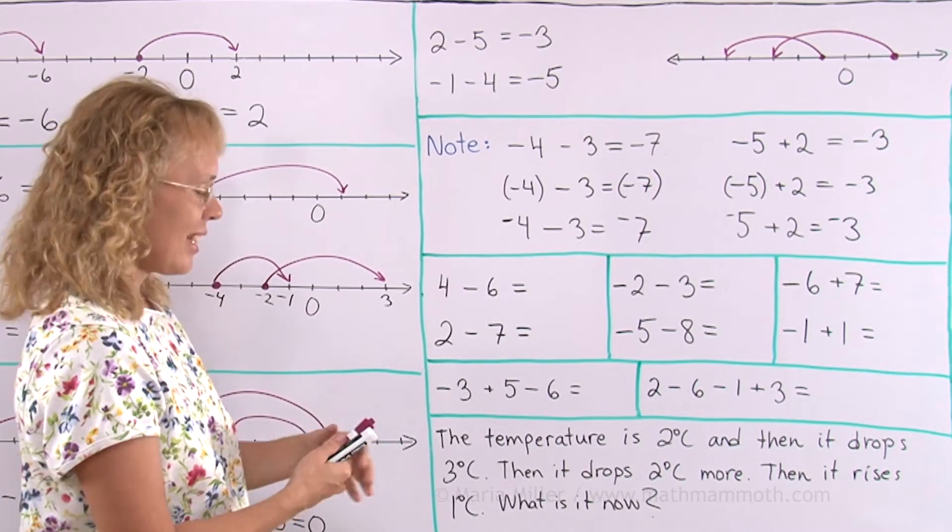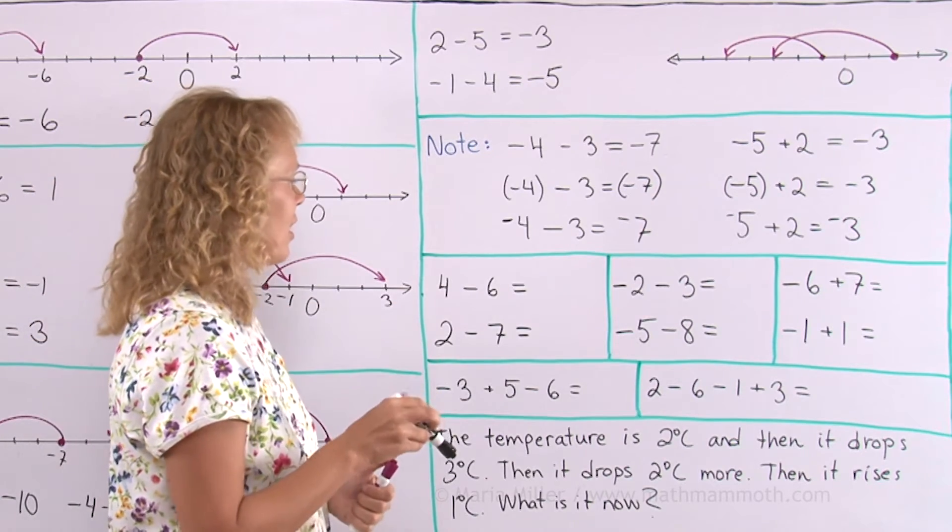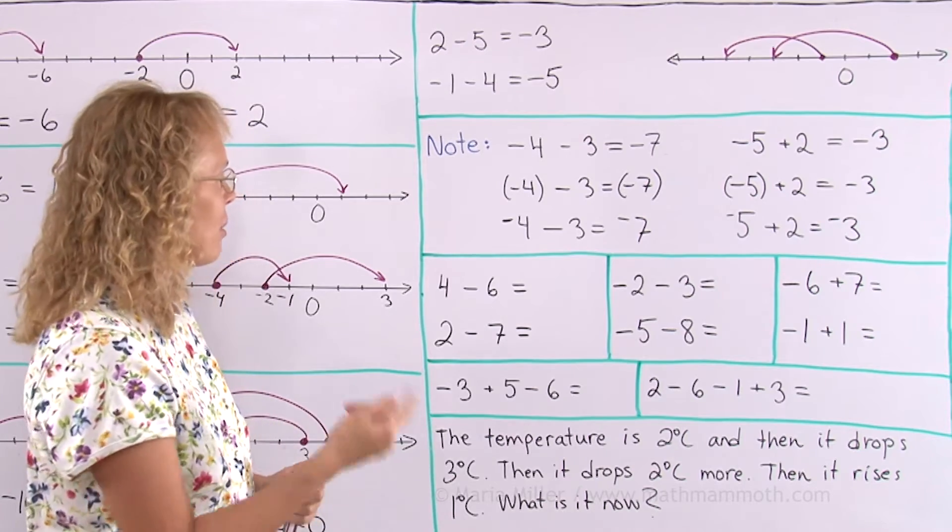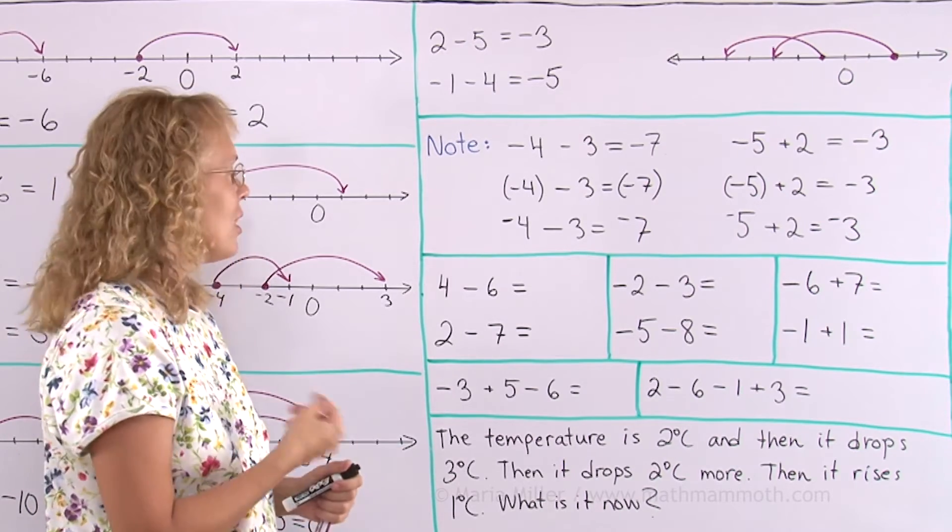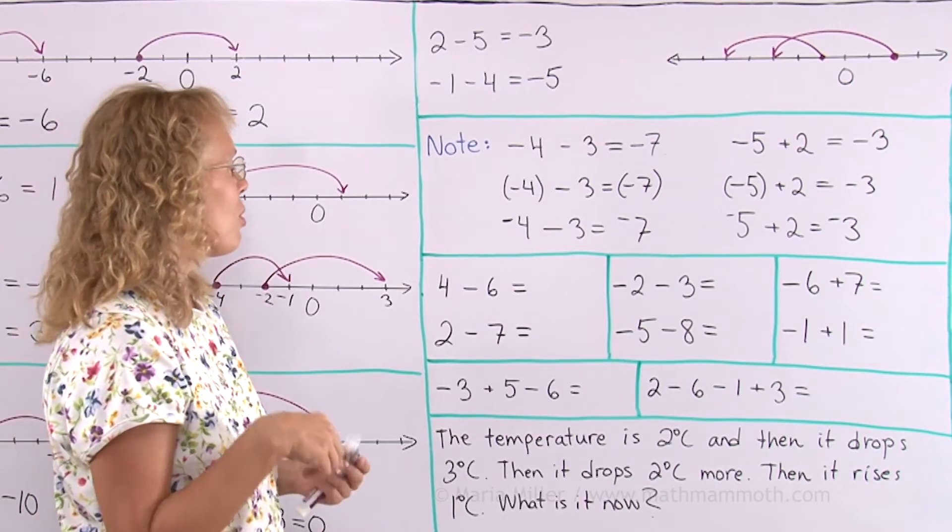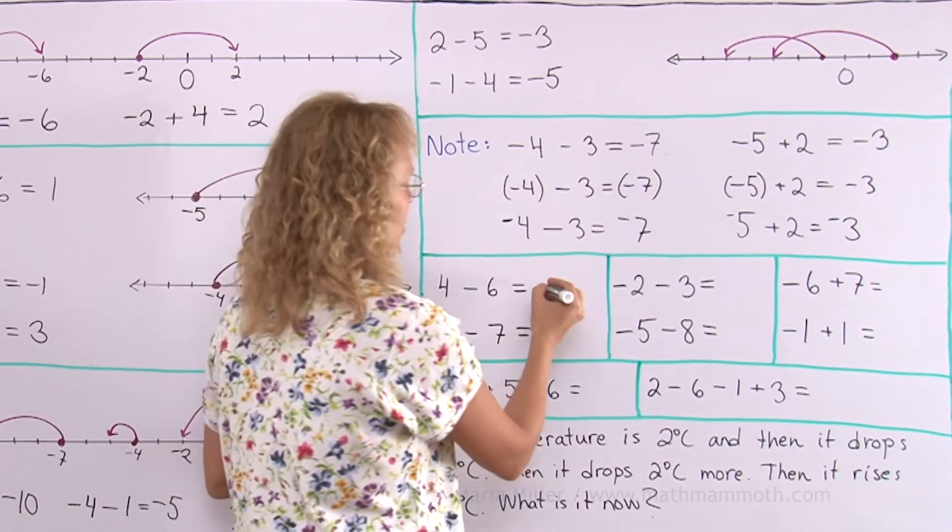4 minus 6. You are at 4 and you jump 6 steps towards the negatives. So that means that you go past 0. If it was 4 minus 4, you would go to 0. But you have to go 2 steps further than that, so you end up in negative 2.